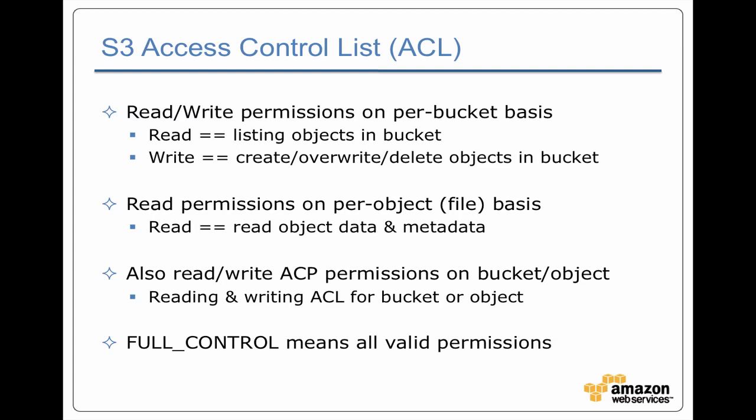Write and delete permissions on files are controlled at the bucket level — if you have write permission on the bucket, you can create a file in that bucket and write to it. On both files and buckets, you have access control permissions, which means separate control over whether you can see the permissions and whether you can modify the permissions. In the user interface you'll sometimes see full control, which means you have all permissions — read and write on the bucket as well as access control read and write — that's full control.